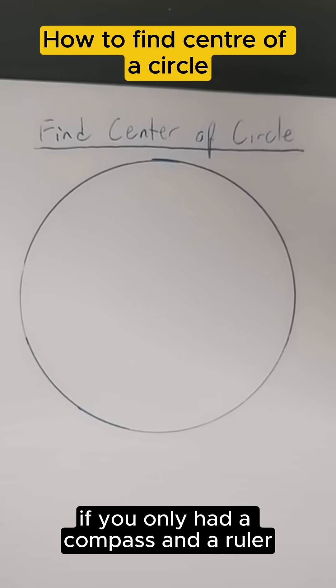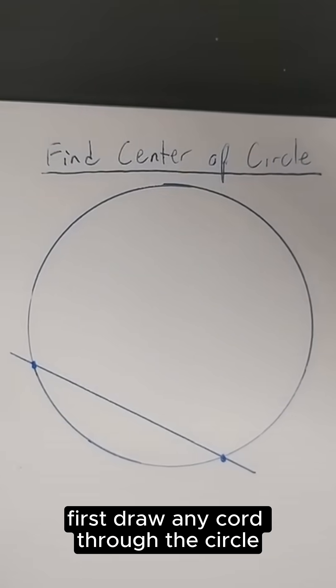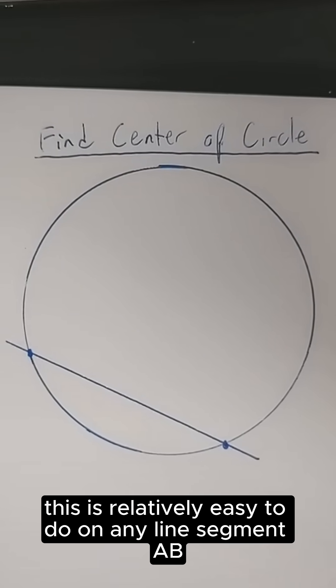How would you find the center of a circle if you only had a compass and a ruler? First draw any chord through the circle, then find its midpoint and draw the perpendicular bisector. This is relatively easy to do.